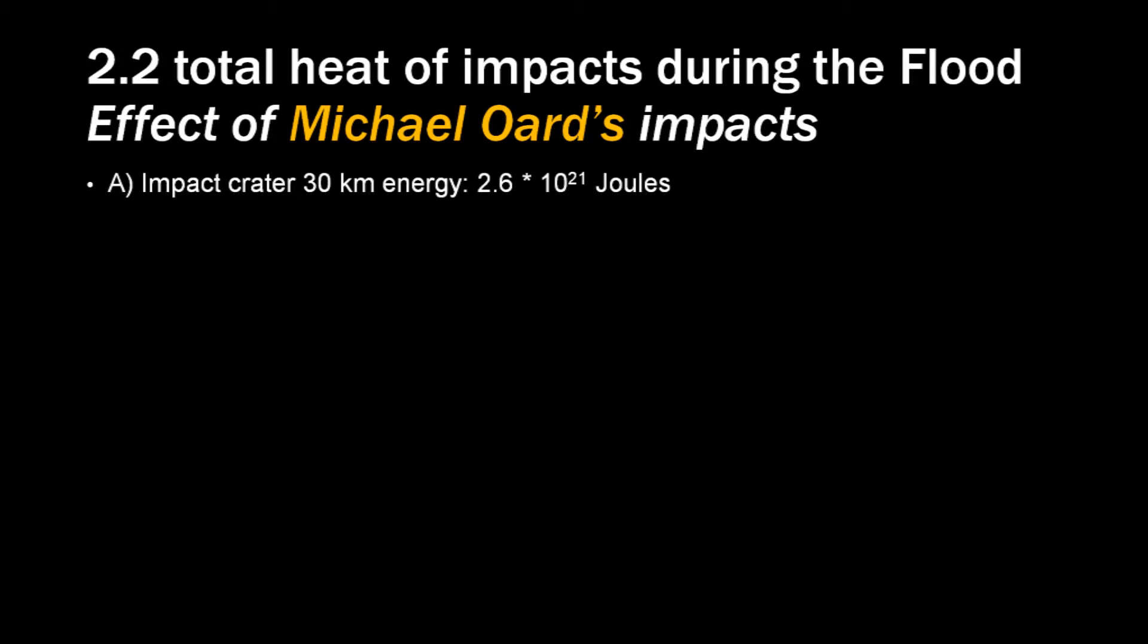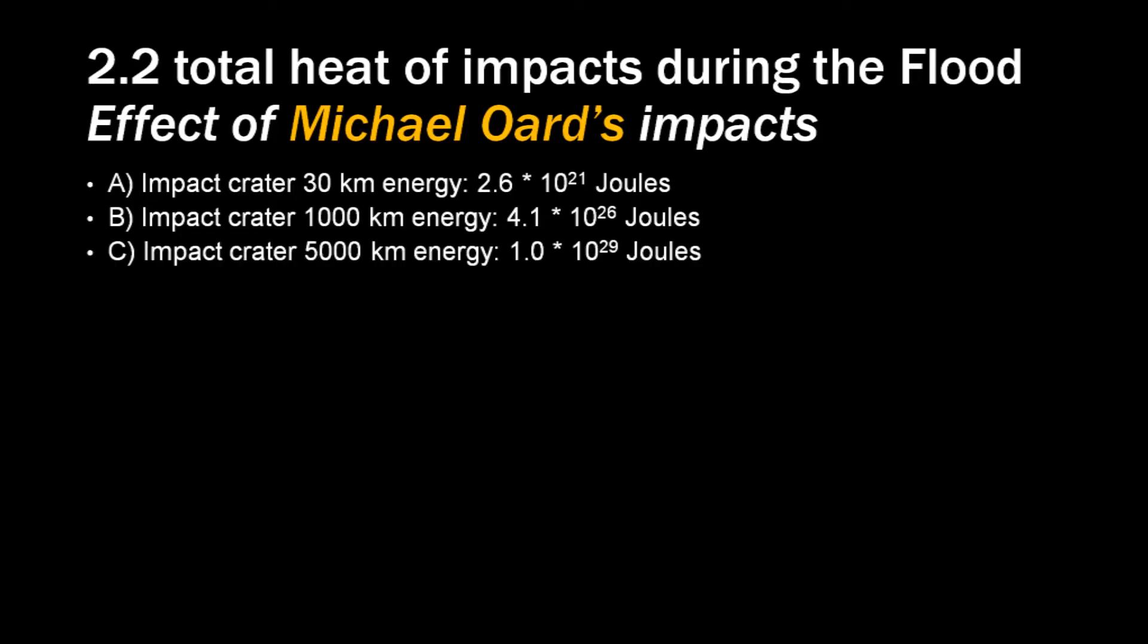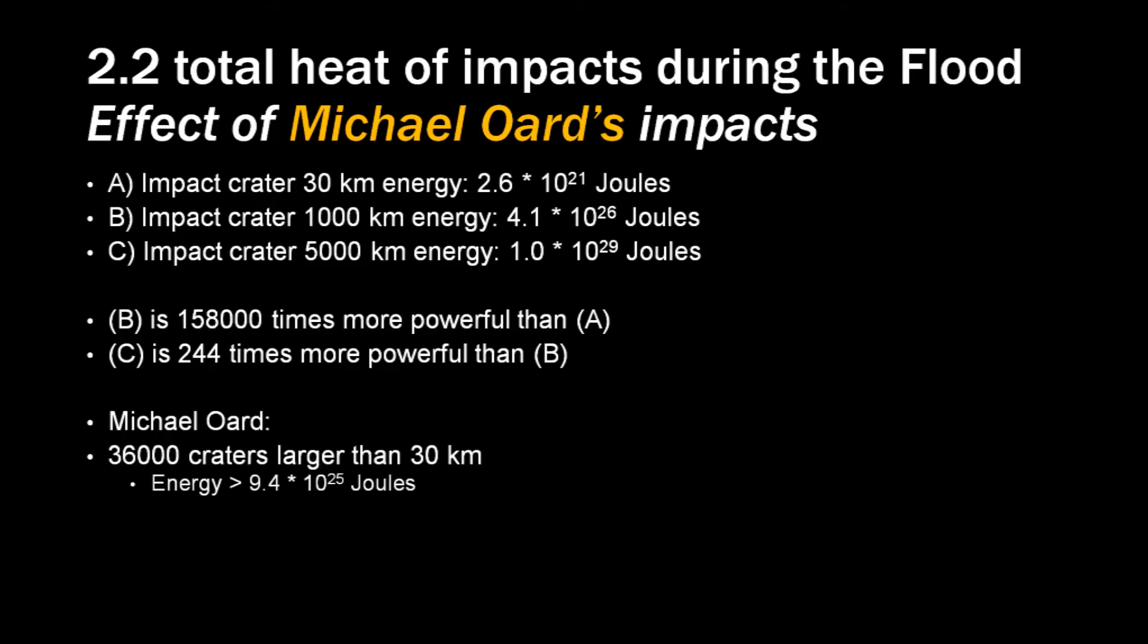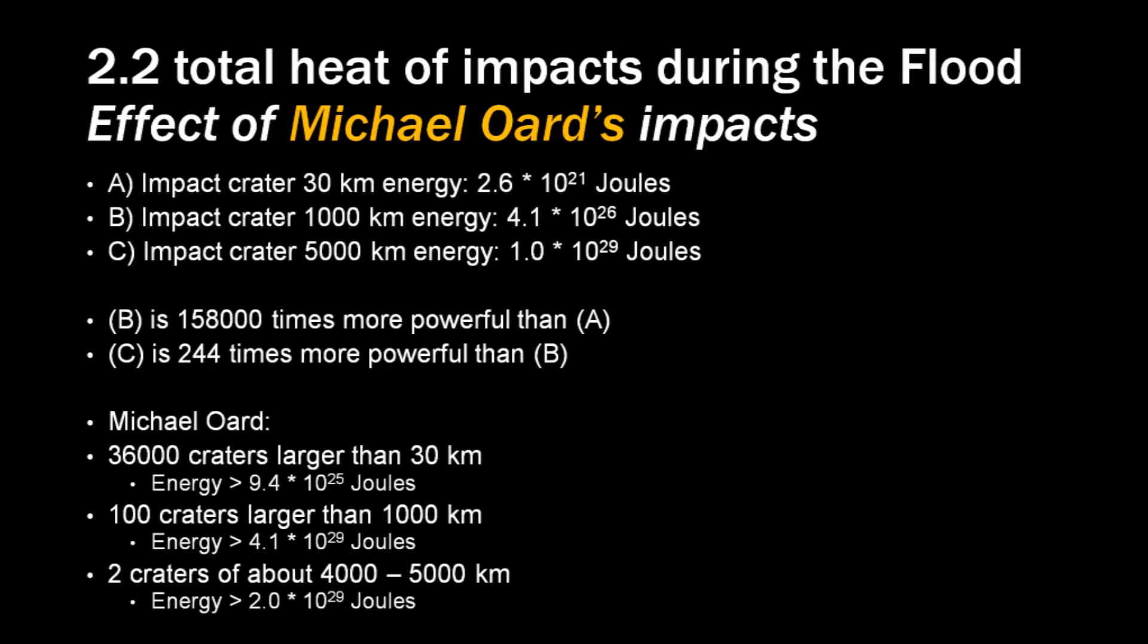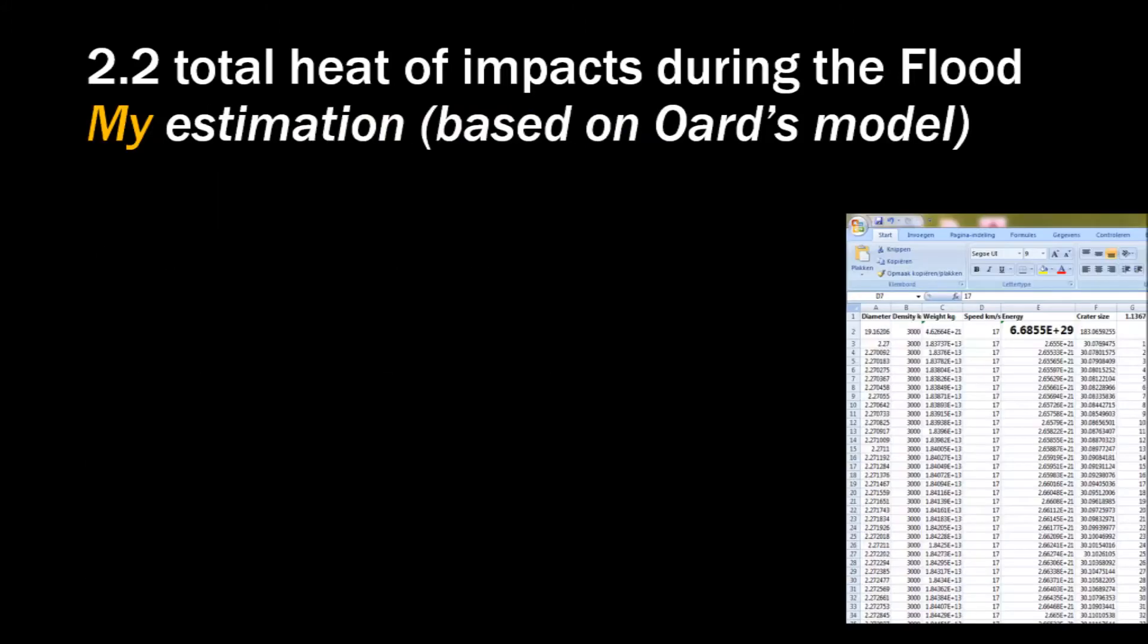The energy involved in this impact is 4.12 times 10 to the 26th joules. To calculate Michael Ord's impact scenario, we would have to make a sum for a lot of craters, ranging from 30 km up to 5000 km in diameter. The largest would have 1 times 10 to the 29th joules. Notice that B is 158,000 times more powerful than A, and C is 244 times more powerful than B.